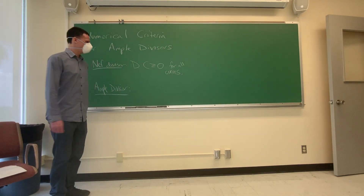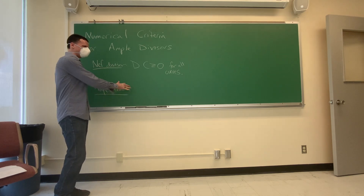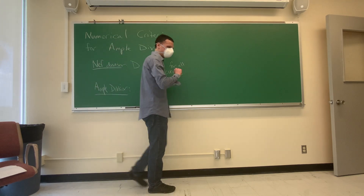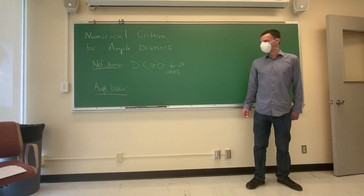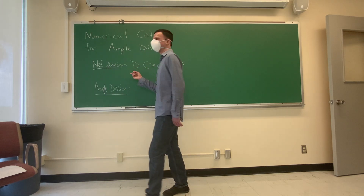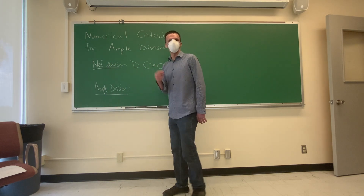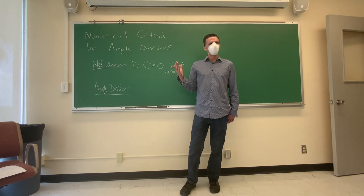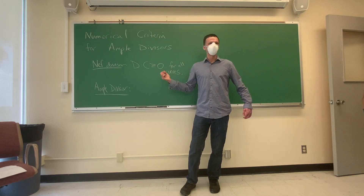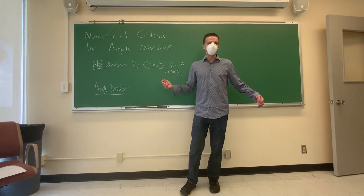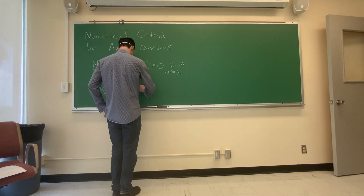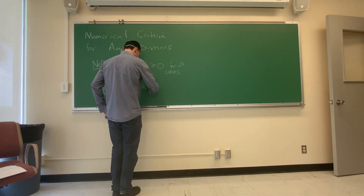Essentially what we'd like to say is that the ample divisors are what you get when you replace the 'greater than or equal to zero' with a strict 'greater than.' That's not quite true for reasons we'll see later. But the correct statement is that these conditions give you a cone — they're preserved by scaling and they're convex. Any positive linear combination of divisors satisfying these conditions also satisfies them. So these divisors give a convex cone, and the ample divisors are the interior of the nef cone.